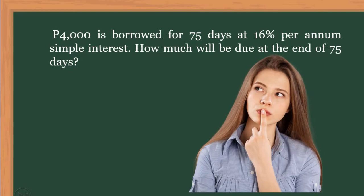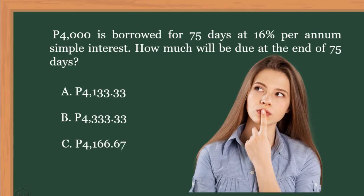4,000 is borrowed for 75 days at 16% per annum, simple interest. How much will be due at the end of 75 days? Letter A: 4,133.33. Letter B: 4,333.33. Letter C: 4,166.67. And letter D: 4,150.